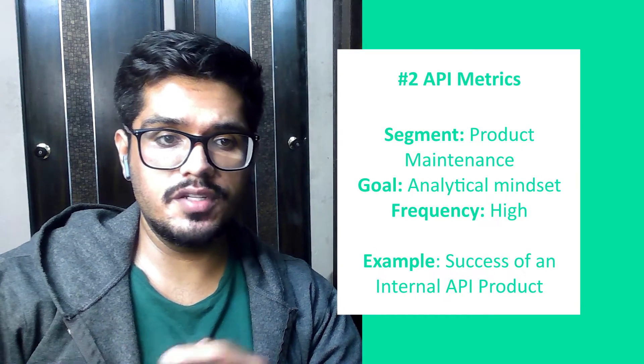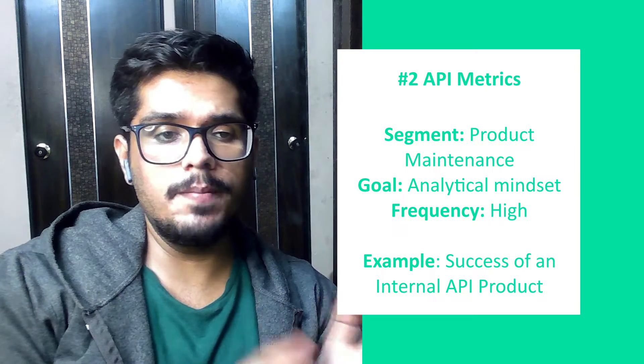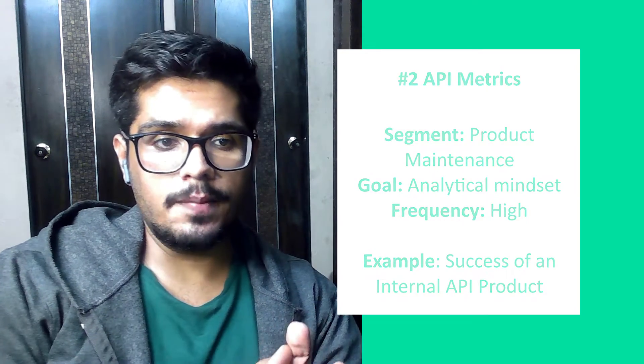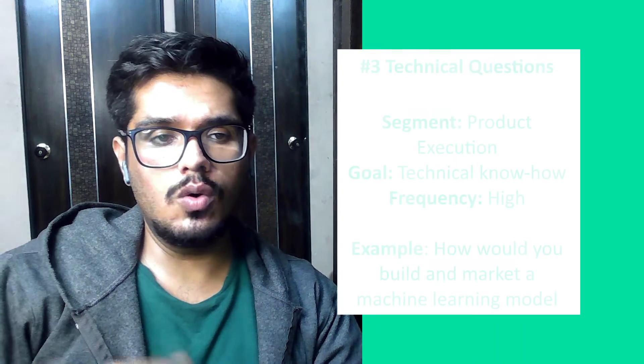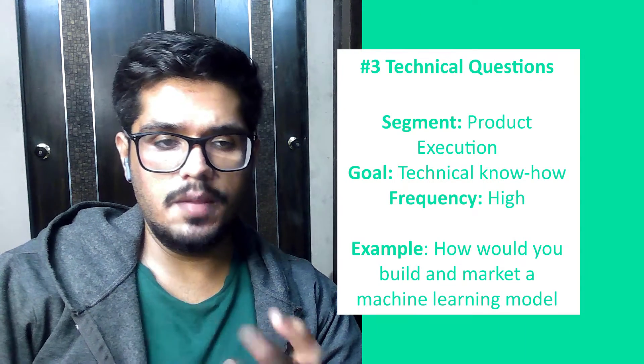Question two is analytical metric-based. An example: how would you measure the success of an internal API product? API metrics are similar to platform or app metrics when it comes to revenue and user acquisition, but the third important aspect is usage — the RPS and scalability. If it's an internal product where you're likely not making money, the important metric is usage. If usage is high, the product is doing well. RPS (requests per second) tells you how scalable your product is.